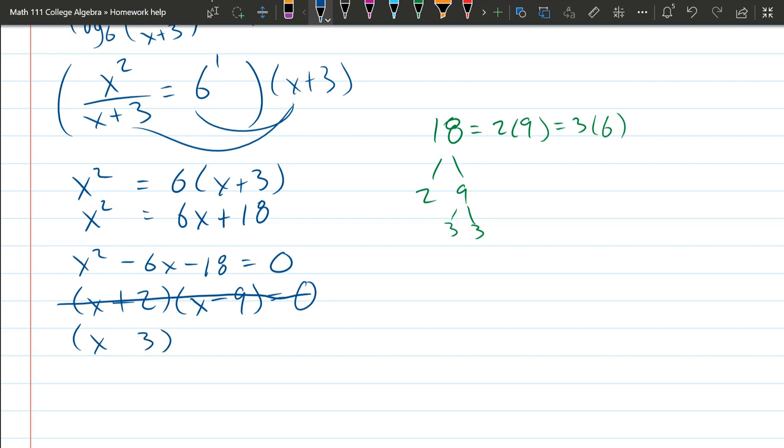We can try the other one. So we have a 3 and a 6. This is going to also fail, unfortunately. Again, the same reasons. We need a negative and a positive. And this adds up to negative 3, not negative 6. So this is also failing.